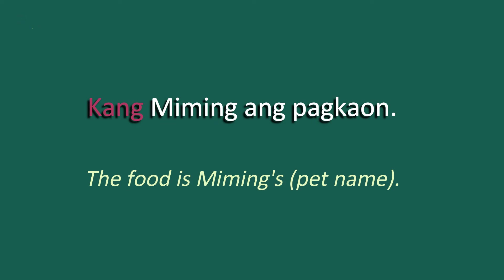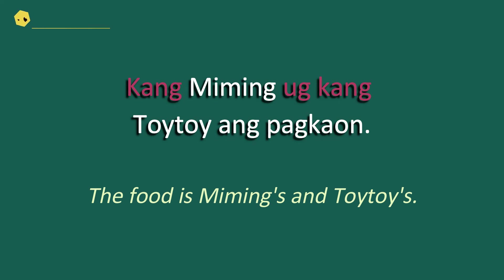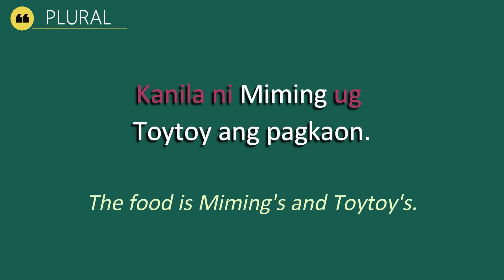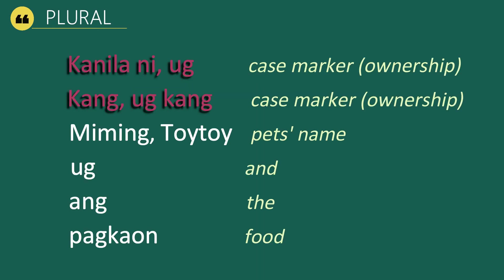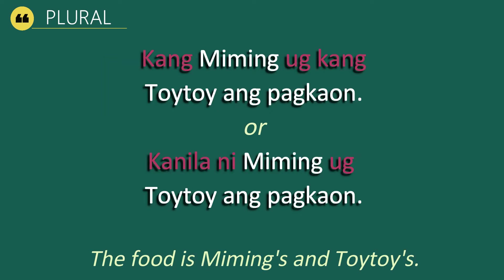In plural form we get: Kang Miming og kang Toytoy ang pagkaon. Or we can also say: Kanila ni Miming og Toytoy ang pagkaon — meaning 'The food is Miming's and Toytoy's.' Our case markers are kanila ni and kang og kang. Miming and Toytoy are the pet's names, og functions as 'and,' and pagkaon means food.